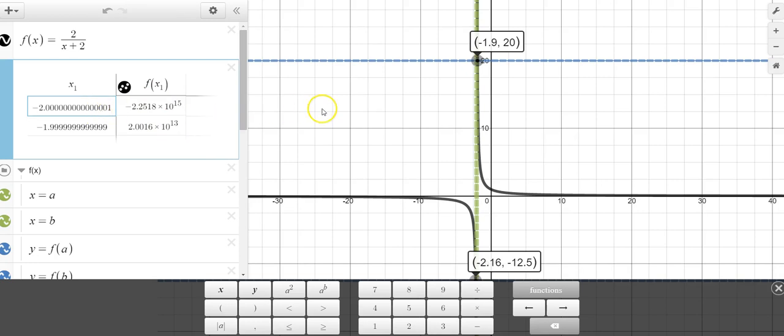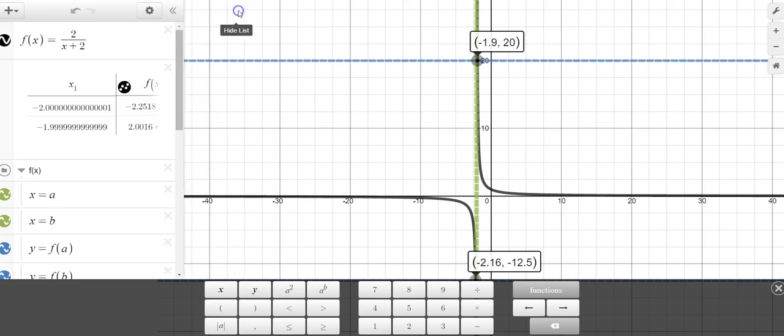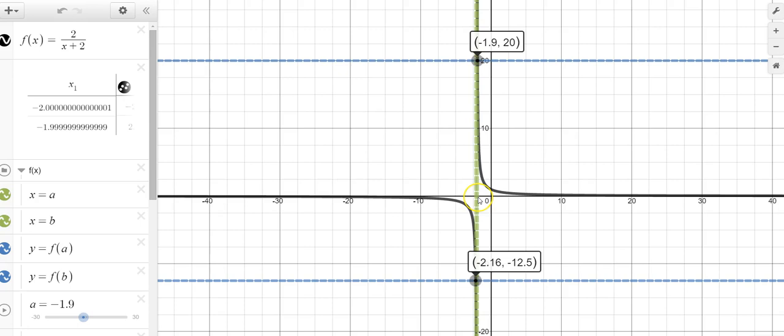So this is called an infinite limit. In other words, as x gets close to negative 2, y gets infinitely big or infinitely small. So we say a limit doesn't exist because I can't make y get close to anything as x gets close to 2. y is just getting farther and farther away.